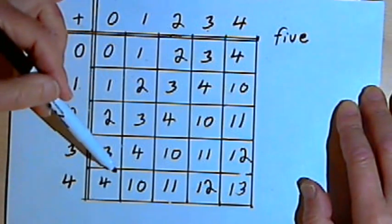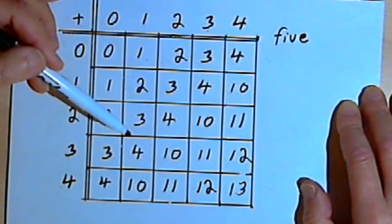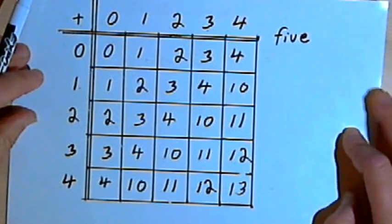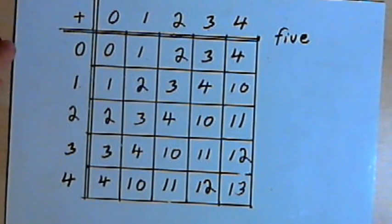But then when you realize there's a lot of patterns going on—whatever you've got going across, you've got going down—so in a way that cuts your memorization in half. And then you've got these diagonal patterns, and you can take advantage of those. So really it becomes kind of easy. That's it. Take care. I'll see you next time.